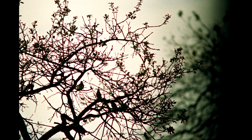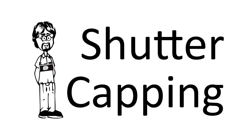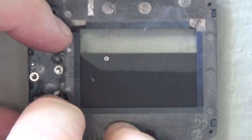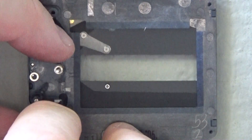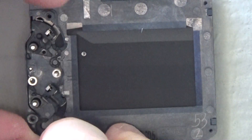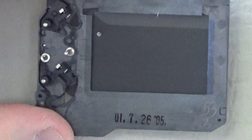The dark edge of this frame tells us that we have a problem with the shutter. We're going to use the term 'shutter capping' here as a catch-all for two different issues. We've talked about how a shutter works before, and here's footage of a shutter showing proper action.